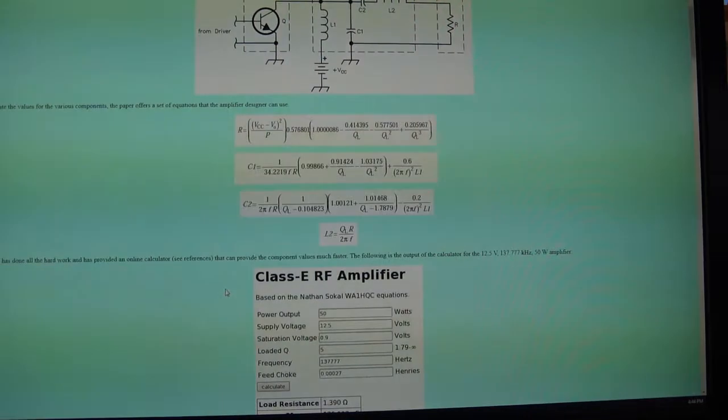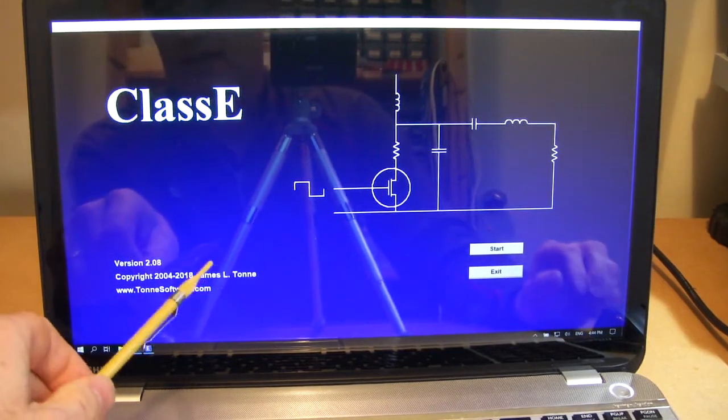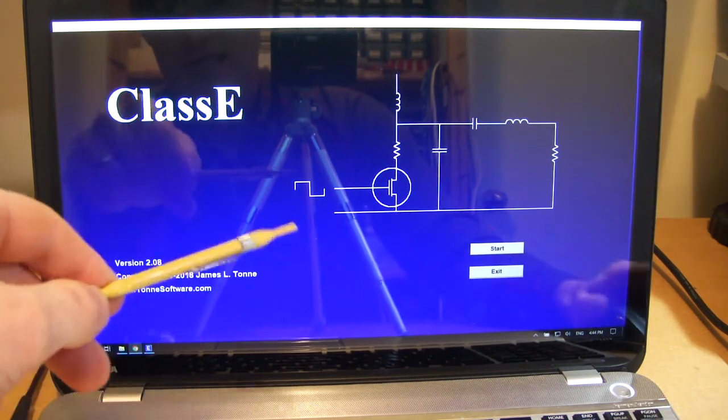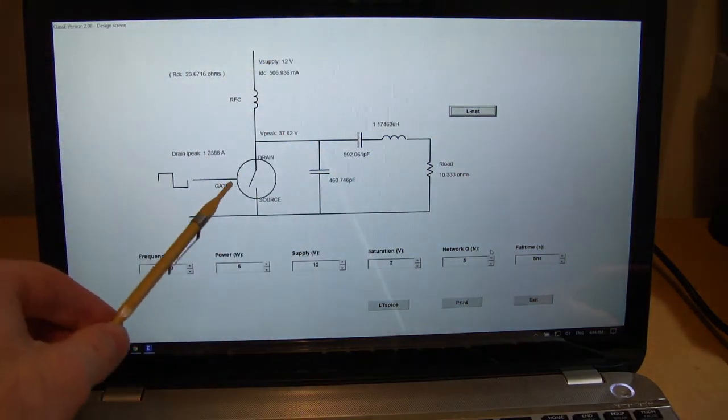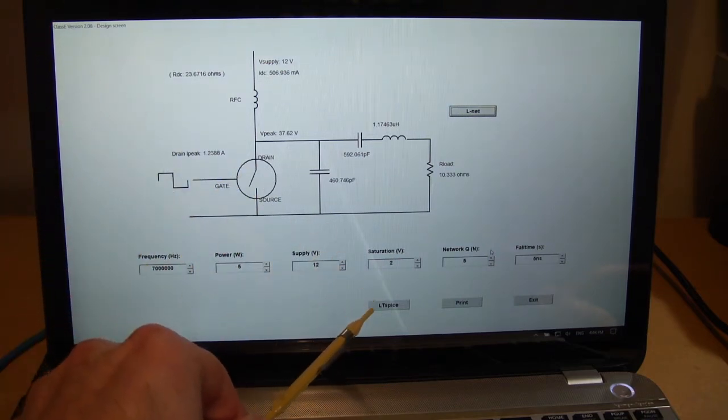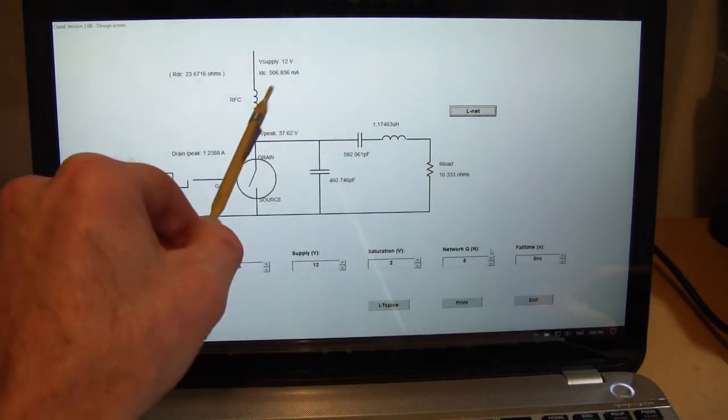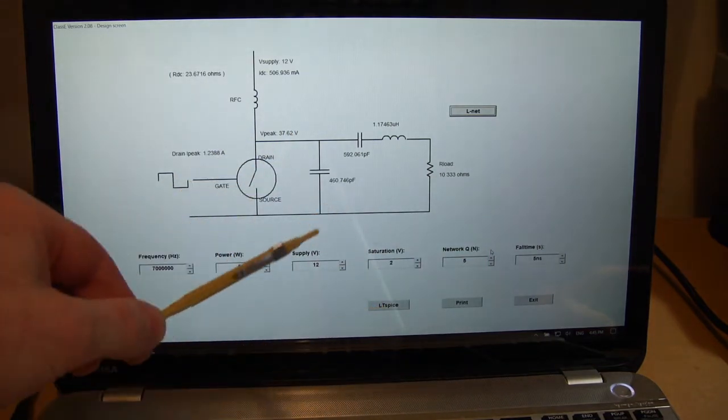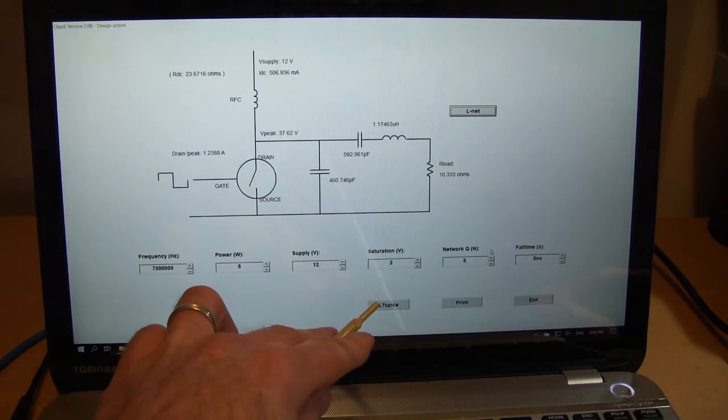And the other one I want to use is this bit of software here from James Tun. It's free to download, and it's for designing Class E amplifiers. If we just start it, we'll see that familiar amplifier again. Now, this one here I really like because it has an LTSpice output. So once you've put in some parameters and you start to get the values for the various components, you can then export that to an LTSpice file, and with LTSpice, suck it in, and then you can do your analysis and plots. So I particularly like that because I use LTSpice quite a bit.